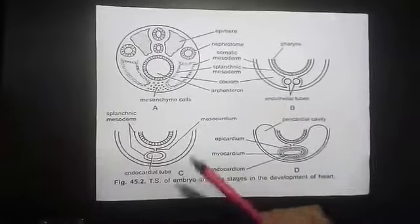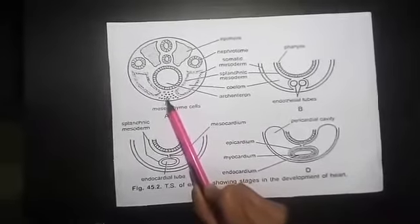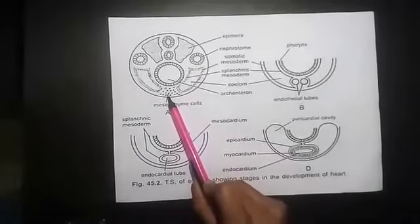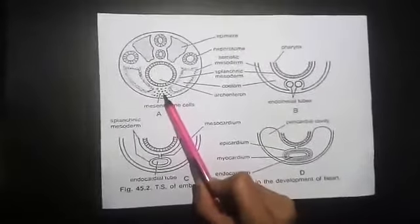During the embryonic development, heart develops from a group of mesenchyme cells. These mesenchyme cells form endocardial cells below the pharynx.